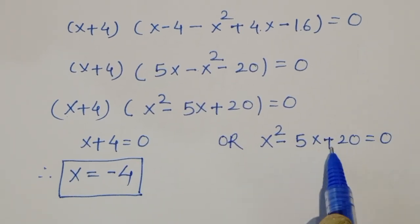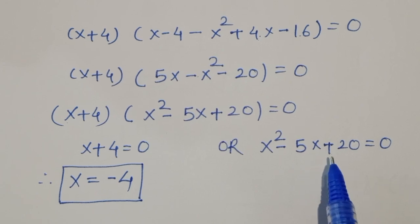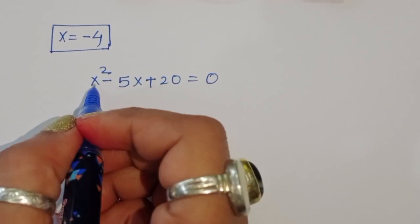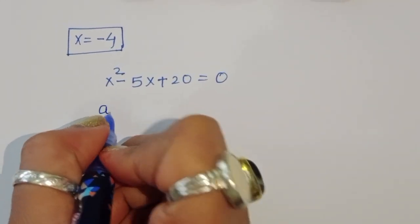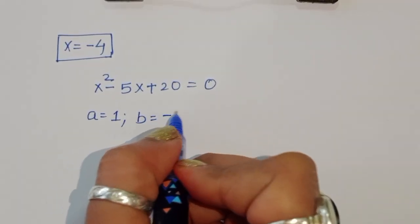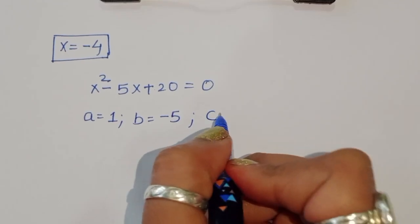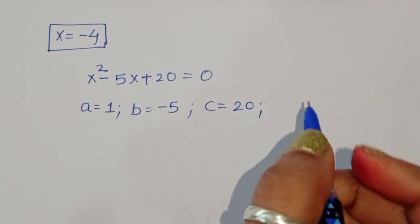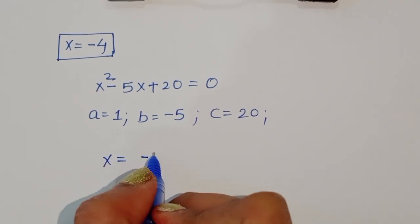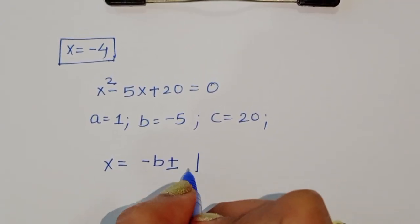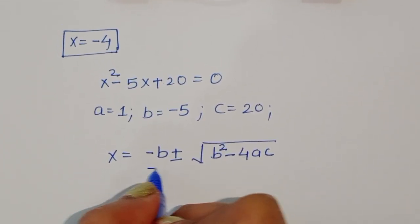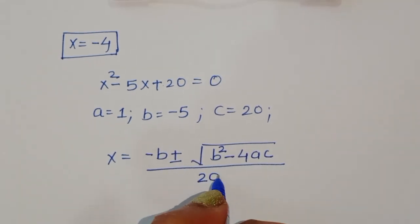Now we solve the second equation x squared minus 5x plus 20 equals 0 using the quadratic formula. Here, the coefficient a equals 1, b equals minus 5, and c equals 20. The formula is x equals minus b plus or minus square root of (b squared minus 4ac), all divided by 2a.